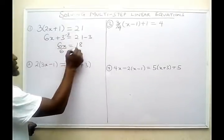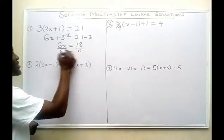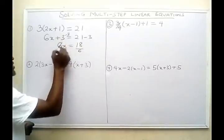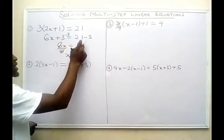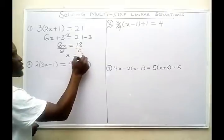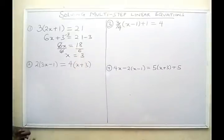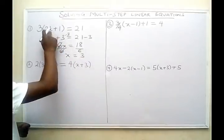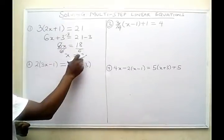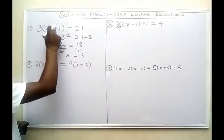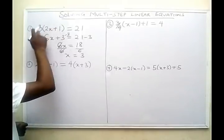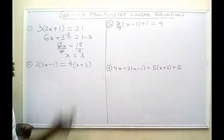Now if I divide both sides by 6, 6 cancels, so x will be equal to 18 divided by 6, and we get 3. Now if you want to run a check, it's just to plug in the value of x into this expression. If you plug in x equals 3: 2 times 3 is 6, 6 plus 1 is 7, and 7 times 3 gives you 21.